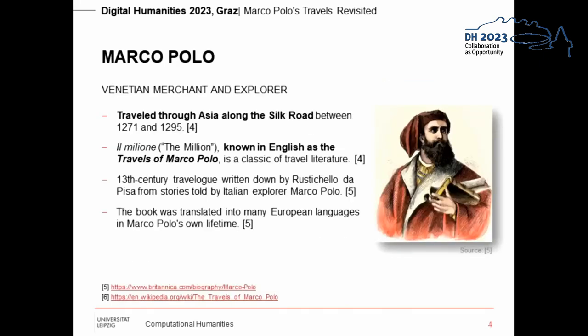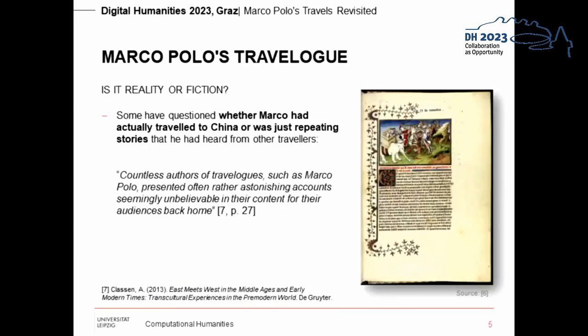One of the earliest accounts of foreign travel and one of the most popular works from the genre of travel literature is certainly The Travels of Marco Polo, a medieval manuscript based on Marco Polo's stories. During Marco Polo's lifetime, the book was translated into many European languages. However, even then it was questioned whether Polo had really been to China or whether he had just reproduced stories picked up from other travelers. As Klassen states, countless authors of travelogues such as Marco Polo presented often rather astonishing accounts, seemingly unbelievable in their content, for their audiences back home.